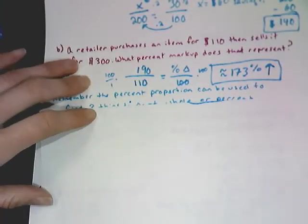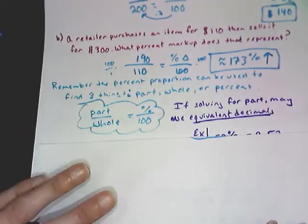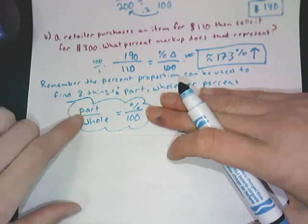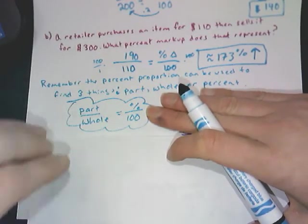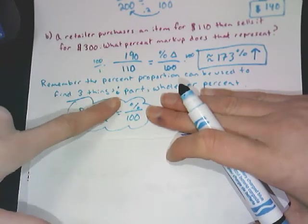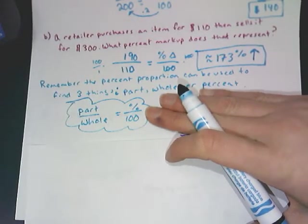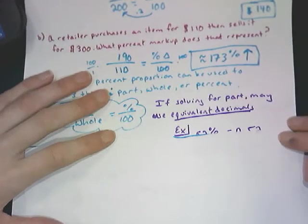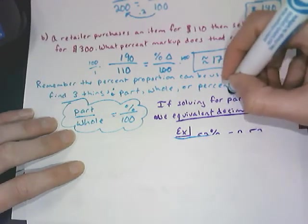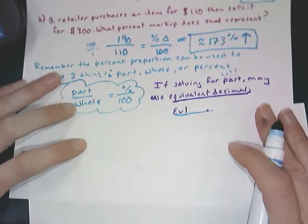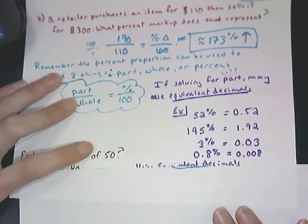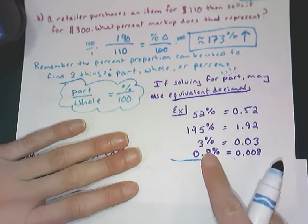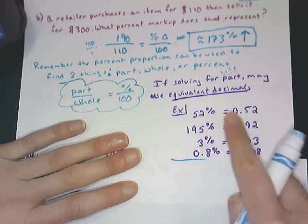Going back to what we learned last time, the reason we want you to learn the percent proportion is because you can use this to solve for any of the three things missing. 100 is always there, but this will work if you're looking for the whole, the part, or the percent. But if you're looking for the part, there's a faster way using equivalent decimals. And it only works if you're looking for the part. When I say equivalent decimal, you have to be really good at making sure you understand the decimal equivalent for all these percentages.